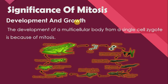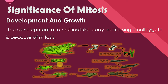Number 2 is the development and growth. The development of a multicellular body from a single cell is because of mitosis. It's a diagram of the life cycle of a frog. After the fertilization of egg, there occurs the formation of embryo. Then, through repeated mitotic divisions, a tadpole forms, then a young frog, and finally an adult frog. That is all because of mitosis, which plays an important role in the development and growth of a multicellular organism from a single cell.